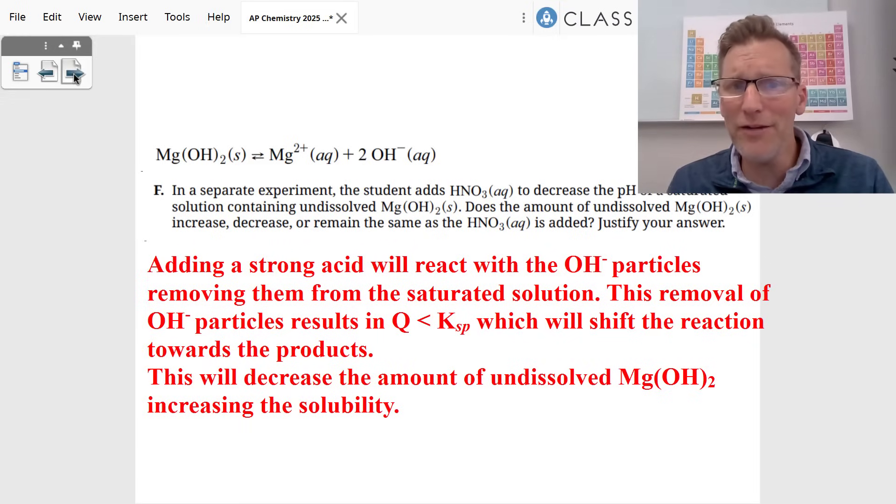And part F, they add a strong acid, HNO3. As the student adds a strong acid, what's it going to do? It's going to react with the OH minus particles, removing them from the saturated solution. The removal of OH minus particles results in a Q that is less than the KSP, shifts the reaction towards the products. You can see the magnesium hydroxide solid is going to become more dissolved. It's going to increase the solubility. It will decrease the amount of undissolved solid magnesium hydroxide.